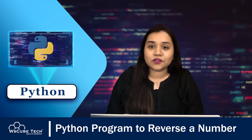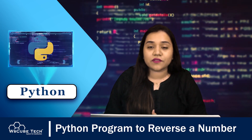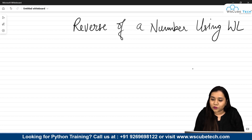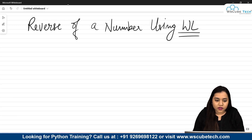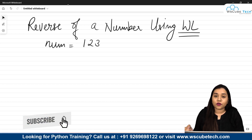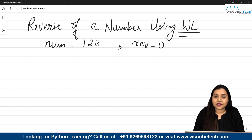Let's talk about using the while loop first. I'll tell you the logic we are going to use, then we will write the program. To find the reverse of a number using a while loop, first we need a number as input from the user — let's say the number is 123. We will also need another variable called reverse, initialized to zero.